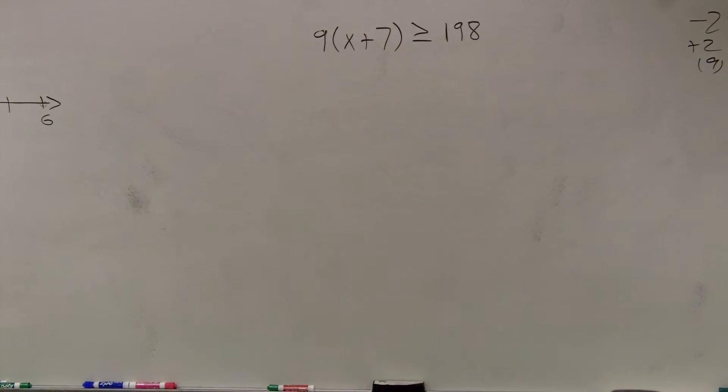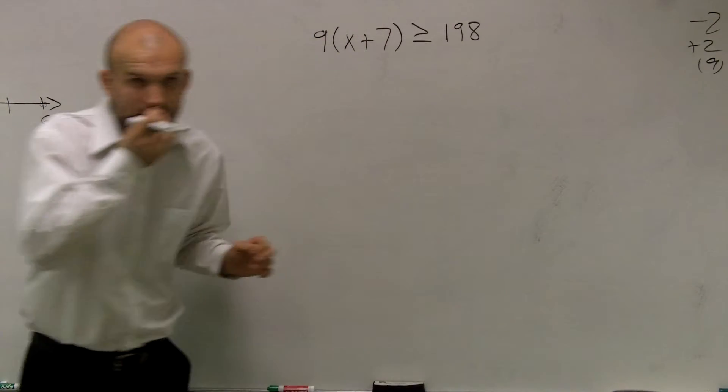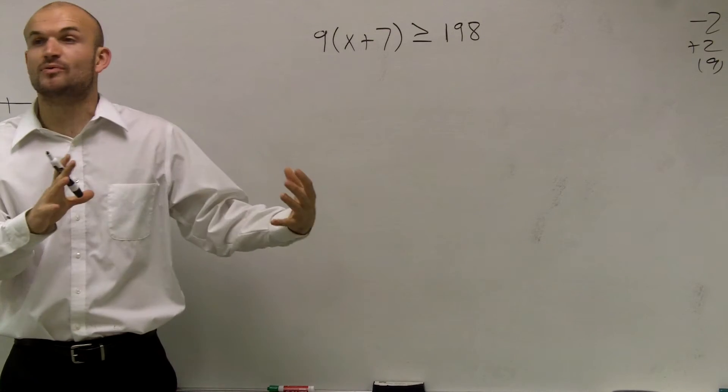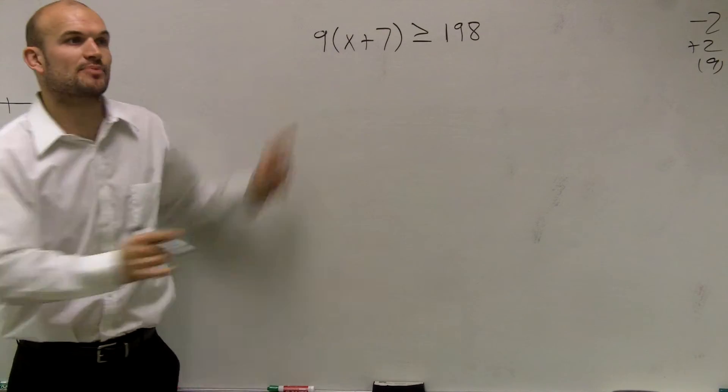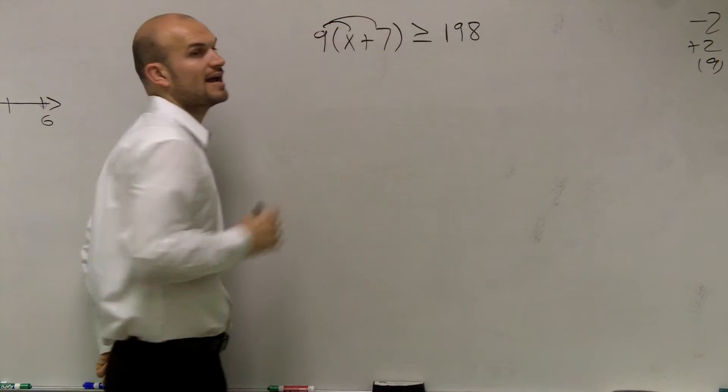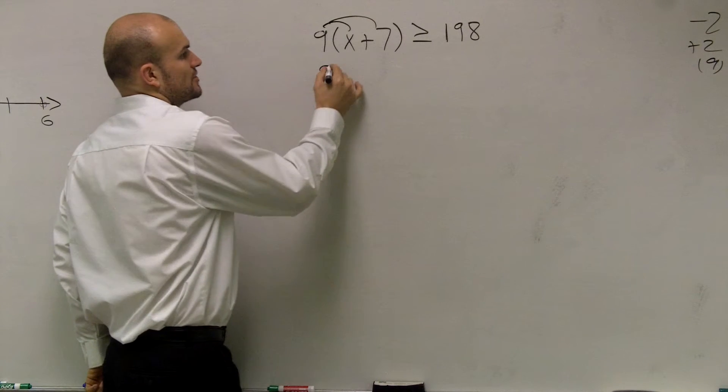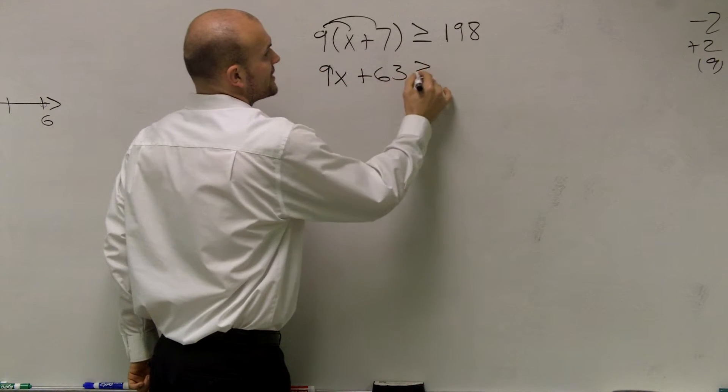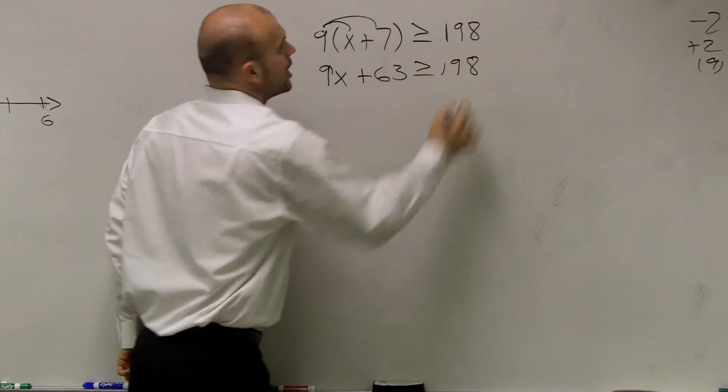Okay, then you guys can get to your work. So when we're doing problems with this, remember whenever you have parentheses, that number outside the parentheses has to be multiplied to every number inside the parentheses. Therefore, I have 9x plus 63 greater than or equal to 198.